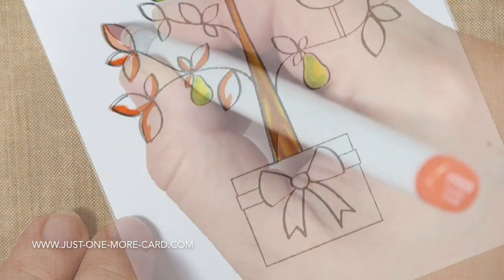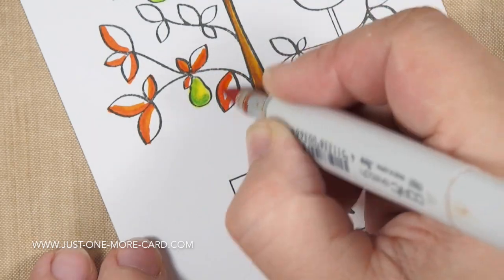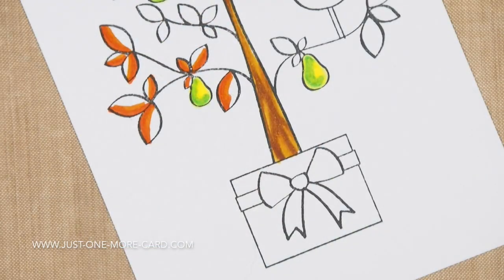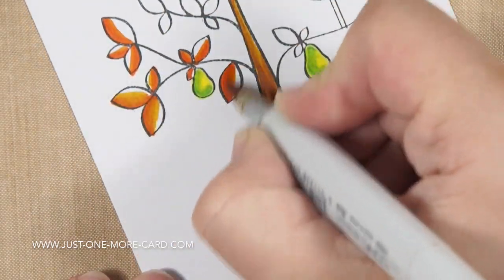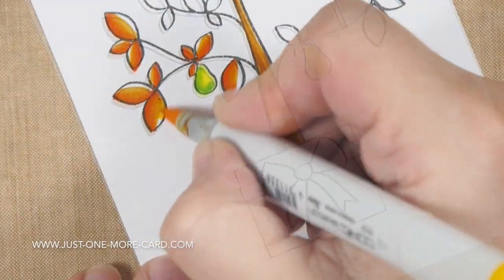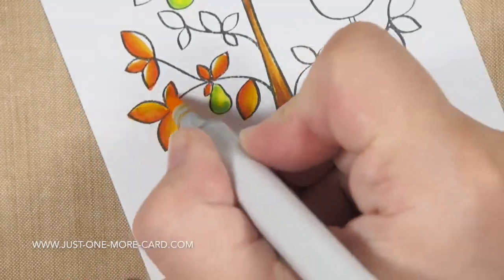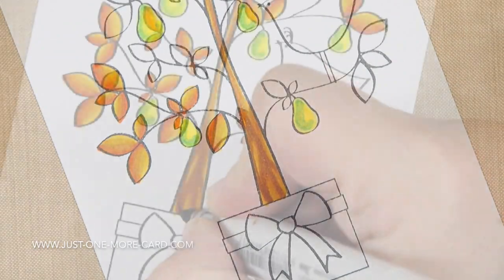For the leaves I decided to use YR's and then yellows and I'm going again from dark to light. Then at the very end I come in with my yellow and it looks almost like a golden leaf.